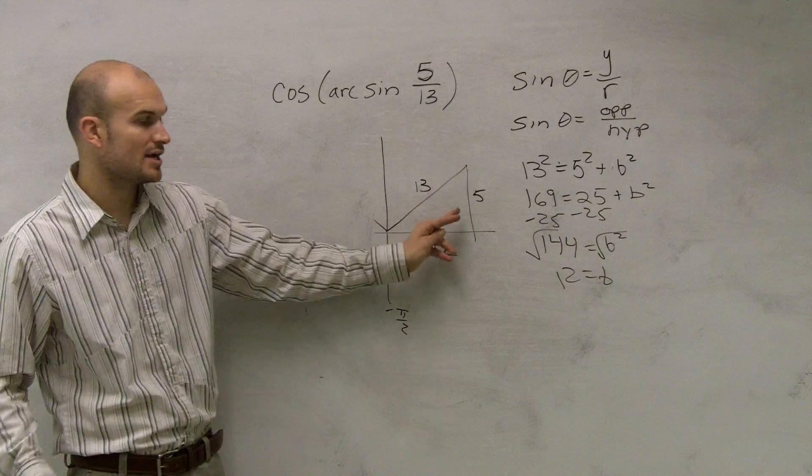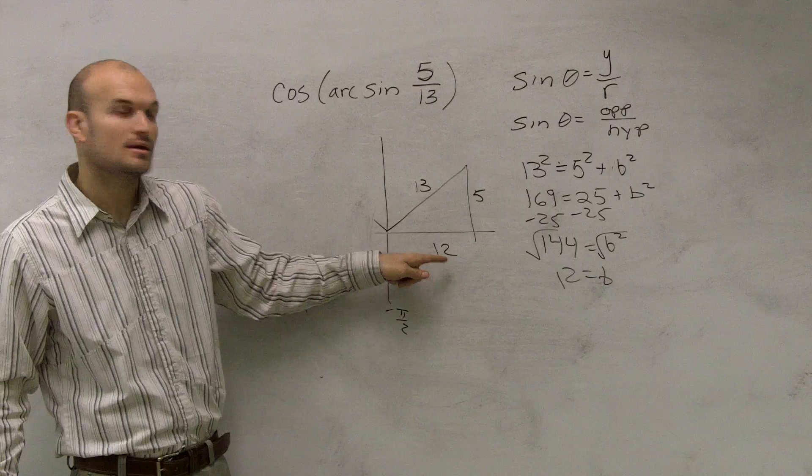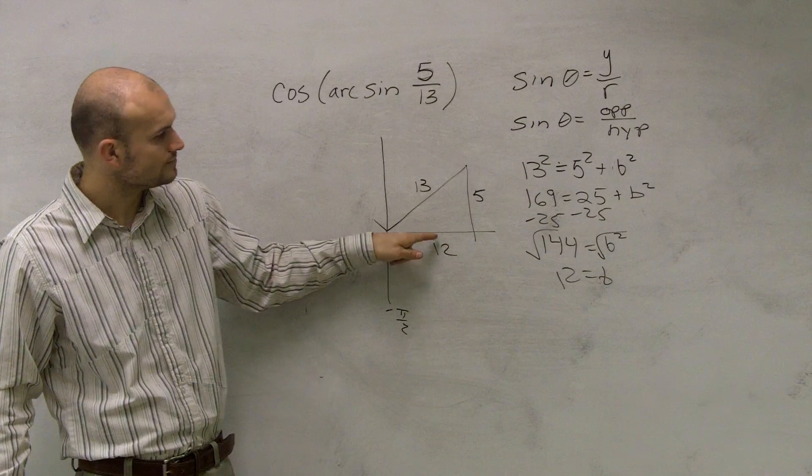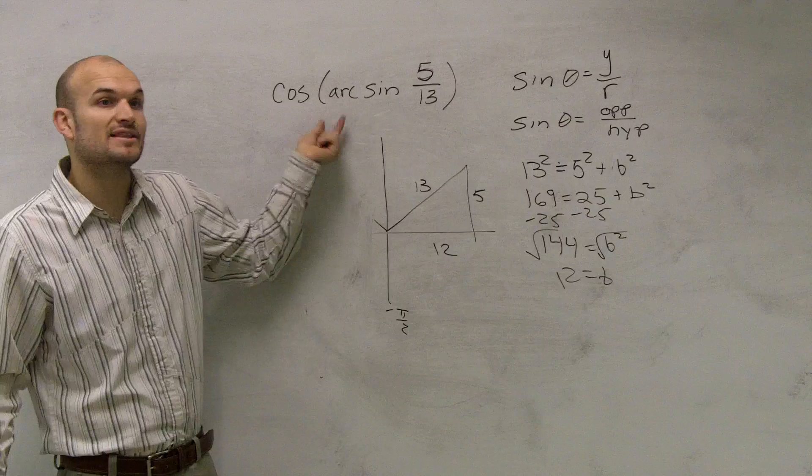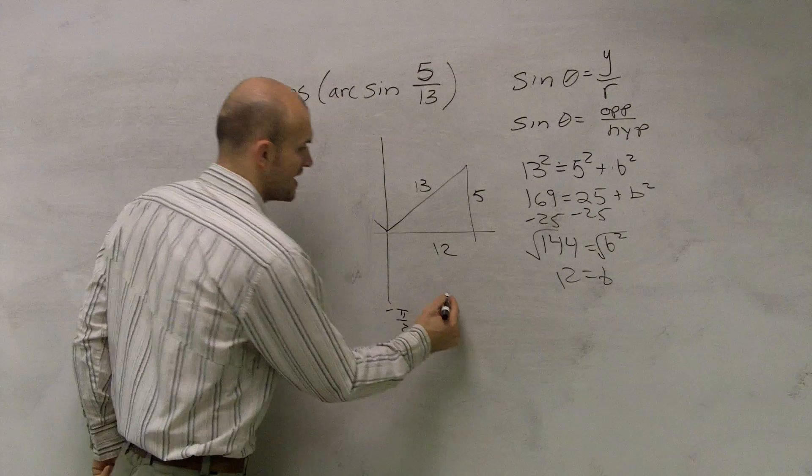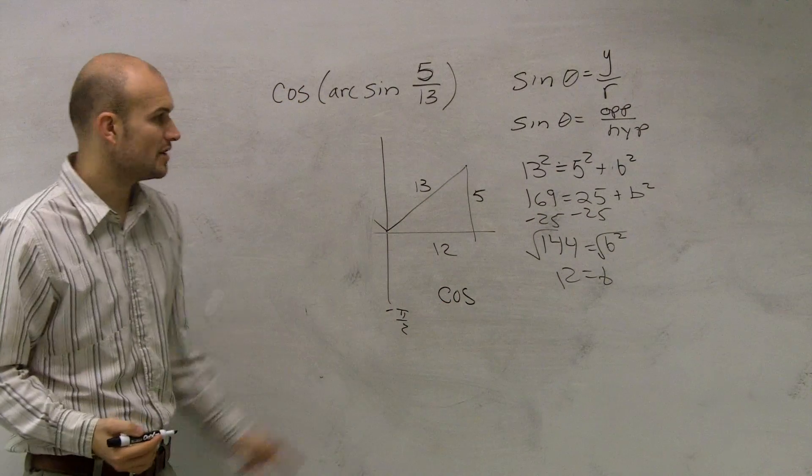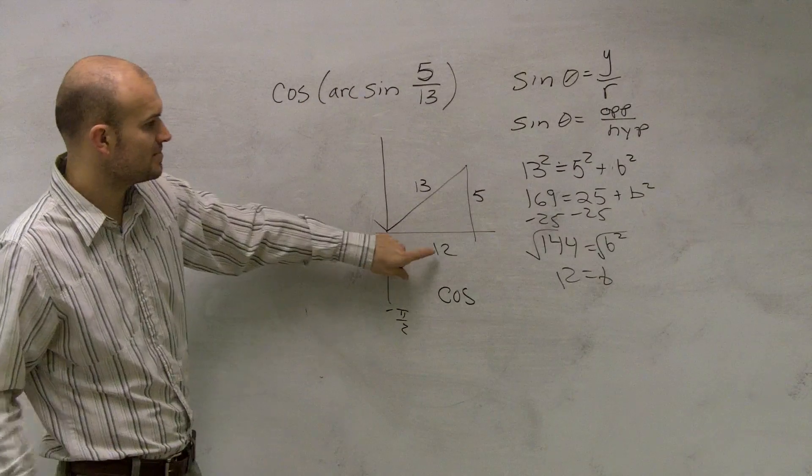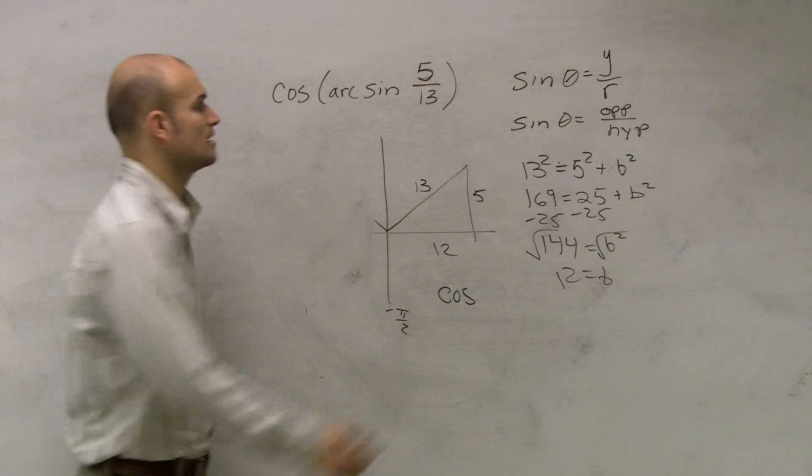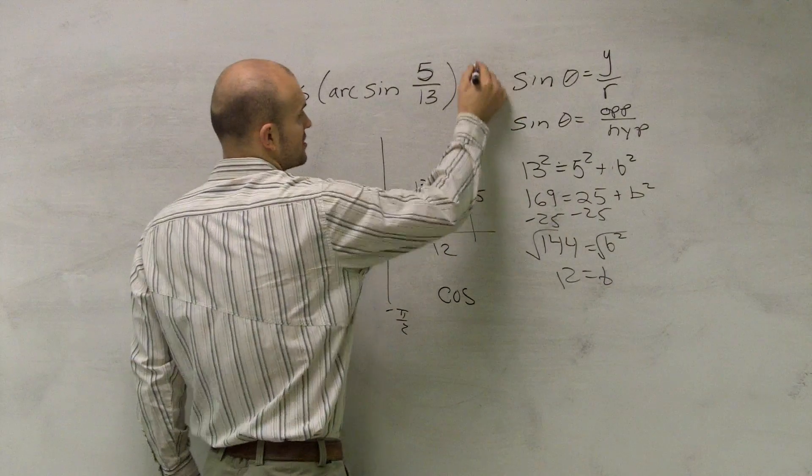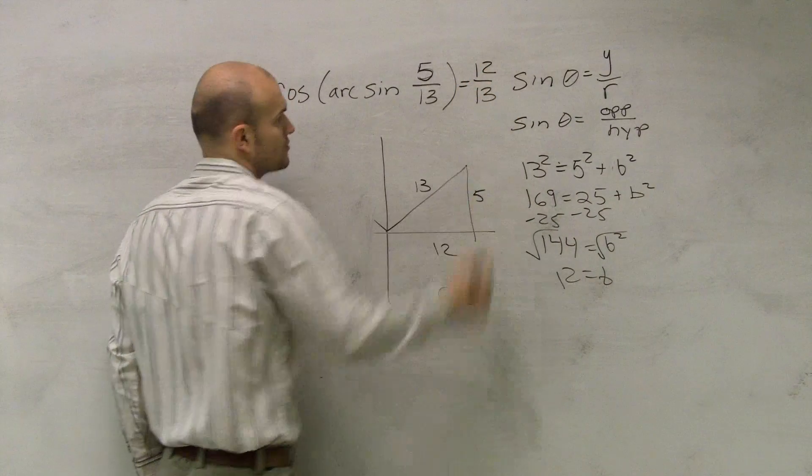So therefore, I have my triangle. Now I've determined what my angle is for my x value. So then it says find the cosine of this. Well, cosine of your angle is going to be your adjacent over your hypotenuse, or your x over your r. So the final value for this is just going to be 12 over 13.